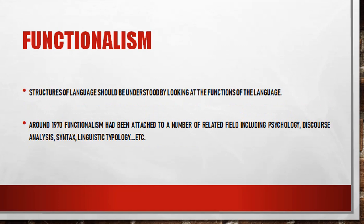In the explanation of functionalism: the structure of a language becomes clear when we look at the function of language — meaning structuralism and functionalism are somewhat interconnected. Around 1970, many fields were connected with functionalism — psychology, analysis, syntax, and different kinds of branches and subjects — to see how language performs a function with different subjects.